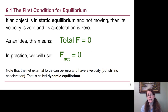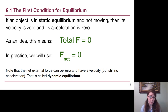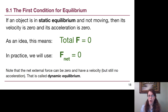The first condition for equilibrium is straightforward — it's the same idea we had in chapters four and five. When we first introduced static equilibrium in chapter four with hanging rope problems, we solved those by thinking about net forces adding up to zero. The total force adds up to zero because we have an object that is not moving — velocity is zero and acceleration is zero. So in practice, we'll see F-net equals zero the same way we did in chapter four.